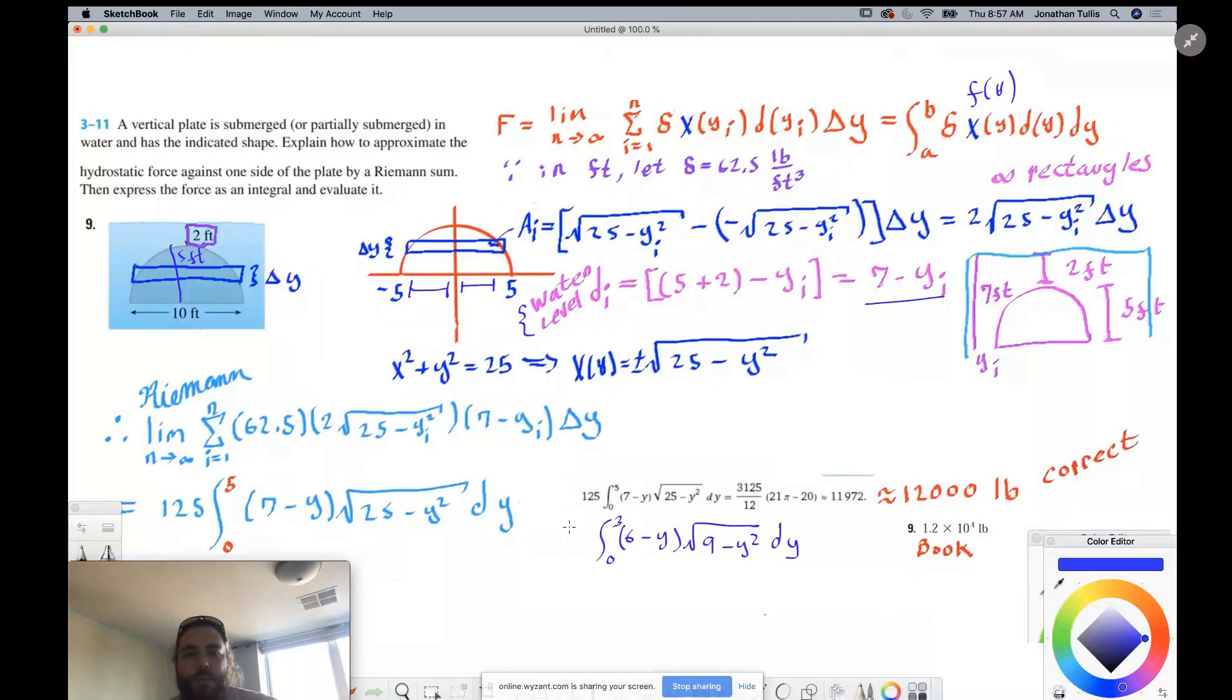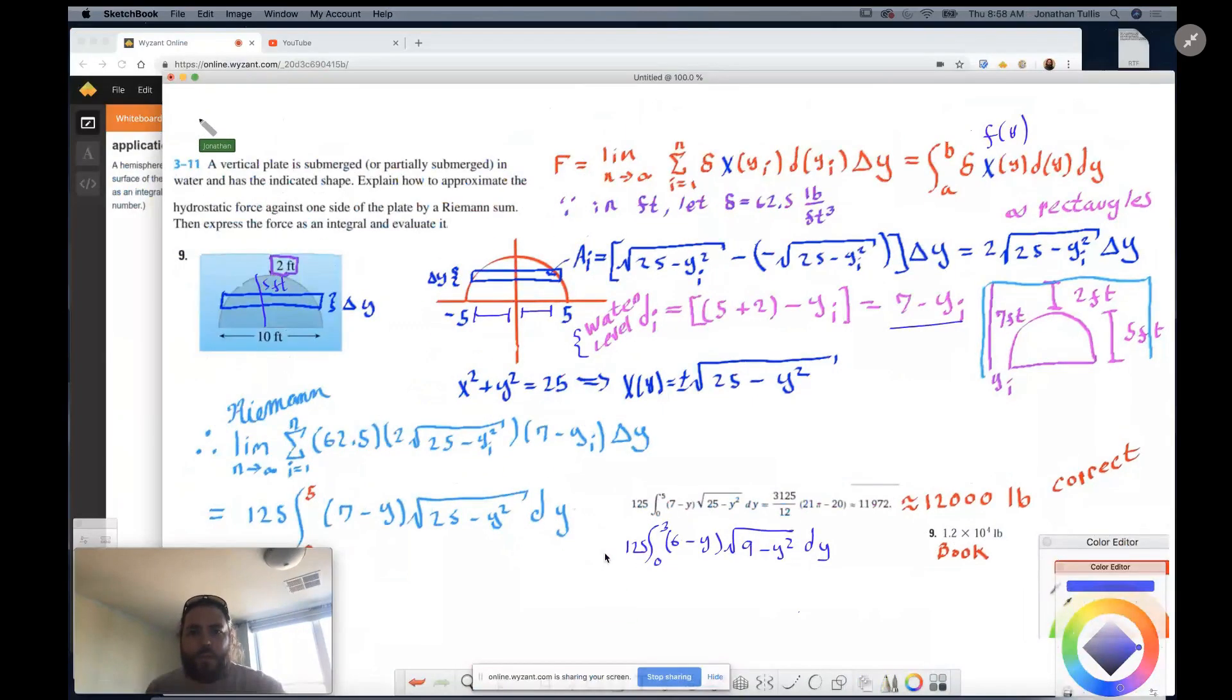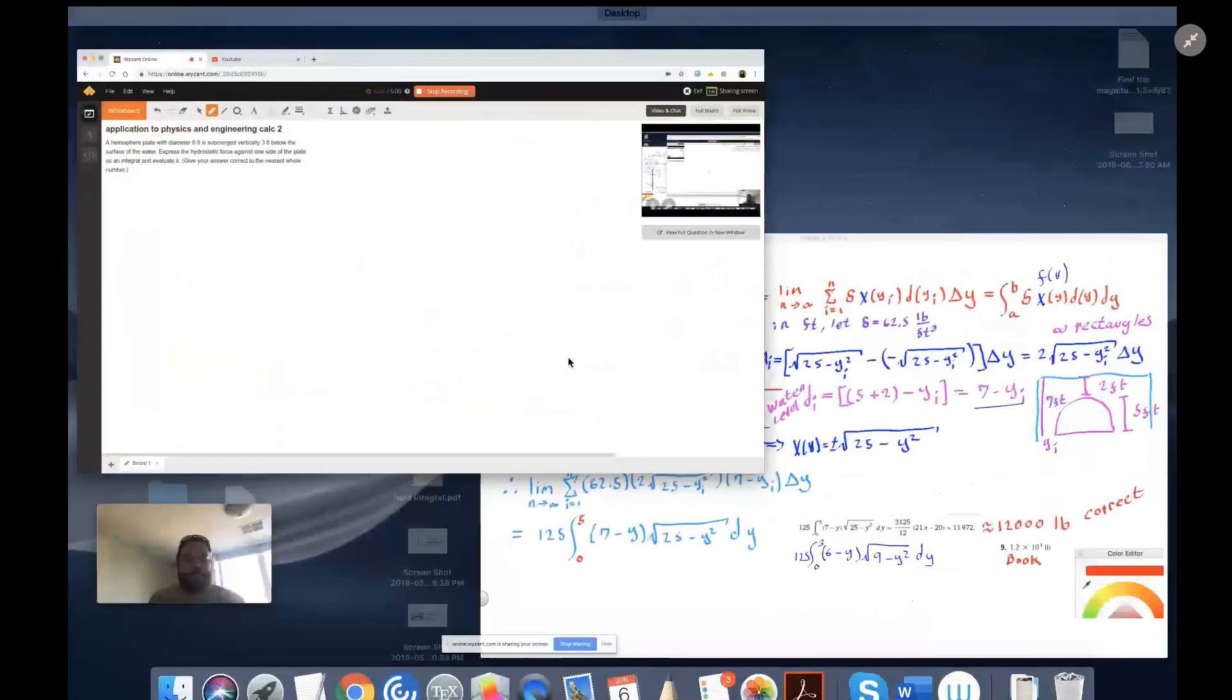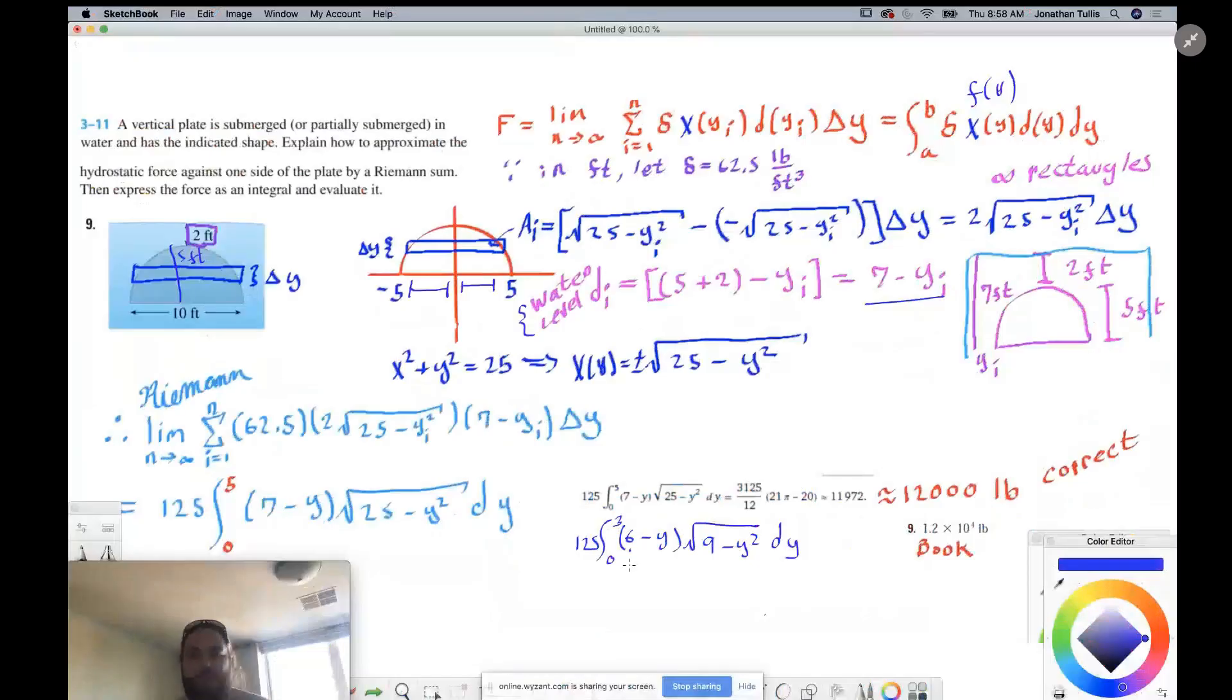dy integral zero to three for your diameter, your radius. Sorry, you're integrating from zero to the radius, by the way. And because we're going from here to here across the plate, so that should be hopefully obvious. And so let me just double check your question. So six feet submerged three feet below the surface. Yeah, so it should look like this, because this piece here is going to be three plus three. And then this piece here is going to be three squared for your radius. And then you can evaluate that and figure it out.